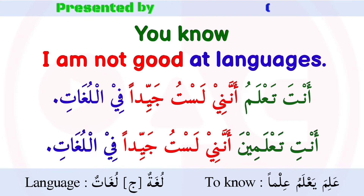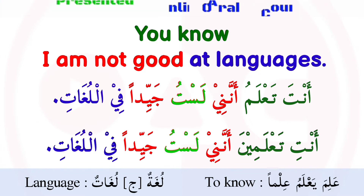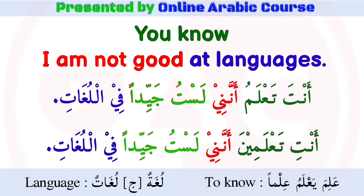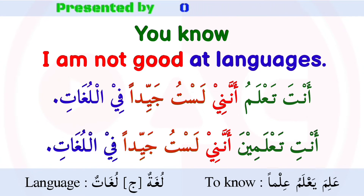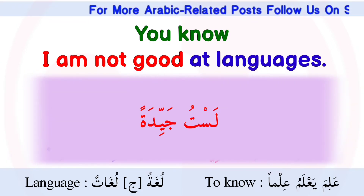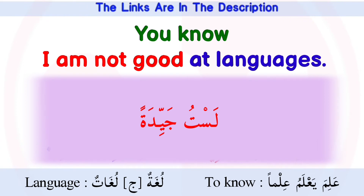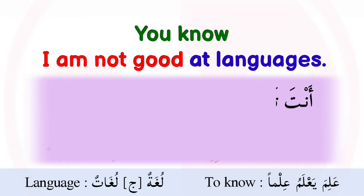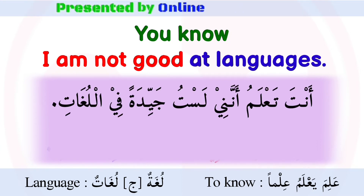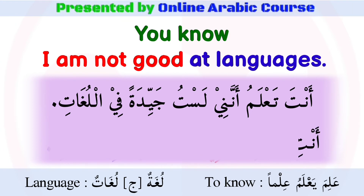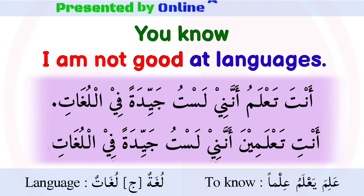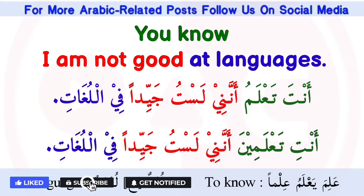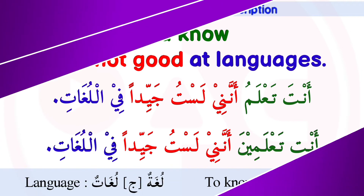Listen carefully — these sentences are for males. 'I'm not good' means lastu jayyidan. But if a female wants to say these sentences, she will use lastu jayyidatan instead of jayyidan. So the sentence becomes: anta ta'alam anna ni lastu jayyidatan fill lughat, or anti ta'alameen anna ni lastu jayyidatan fill lughat.